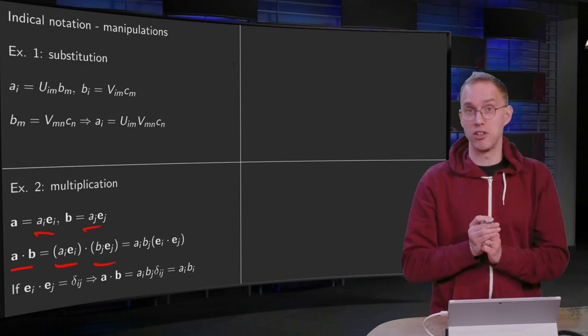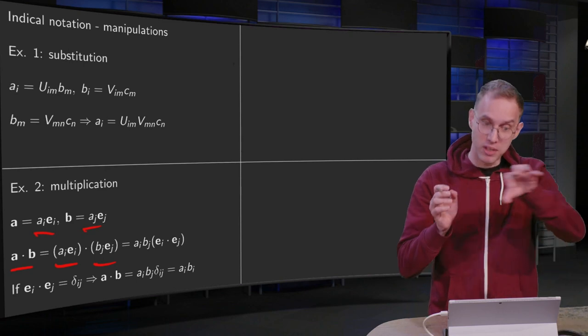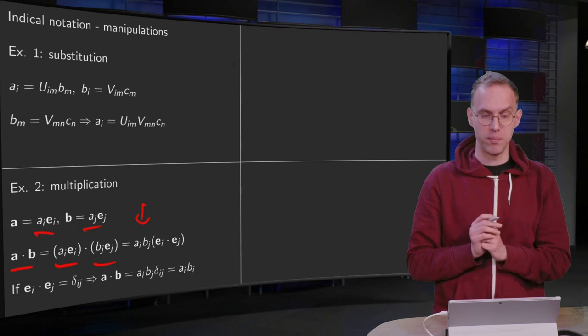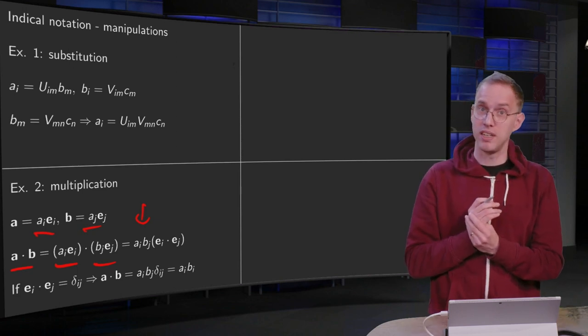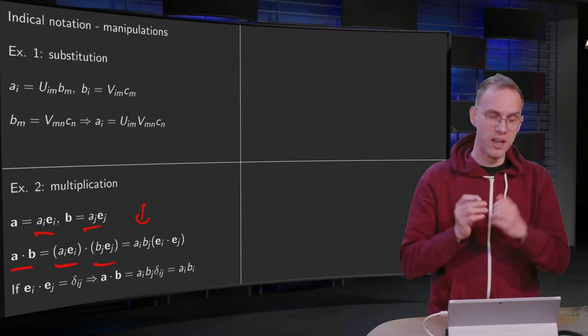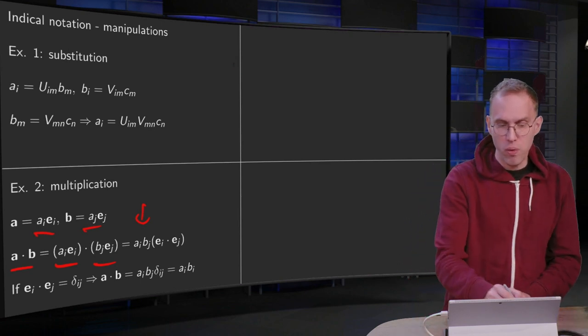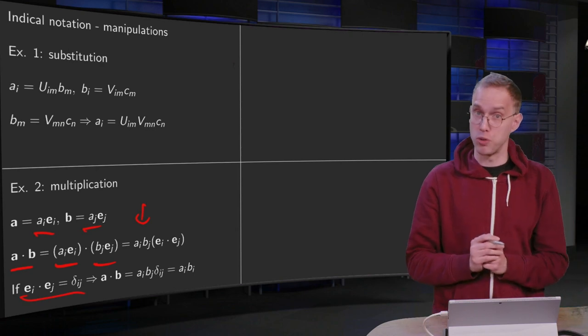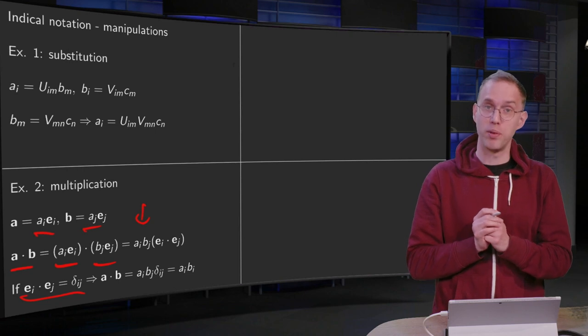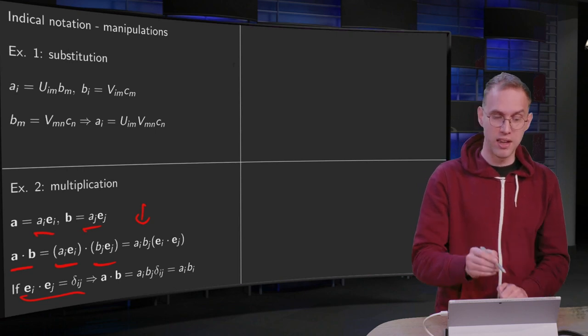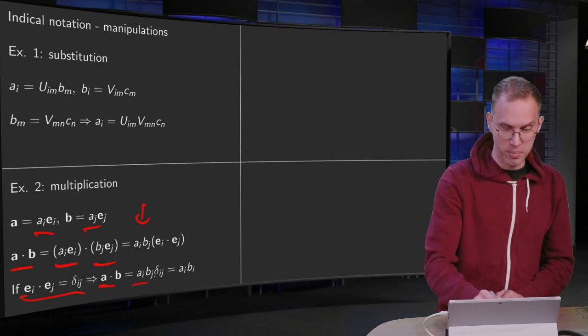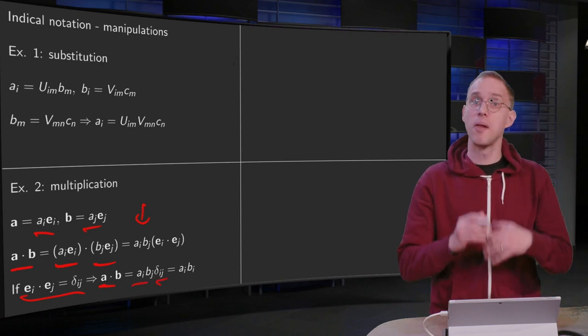The a_i and the b_j are scalars, so you can take them out, you can take them in front. So that gives you a_i b_j and then the inner product between e_i and e_j. Now we will always, I would say, want to use an orthonormal basis, so this inner product e_i · e_j will become our Kronecker delta. So then our A · B gives us a_i b_j times delta_ij.